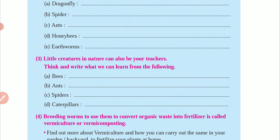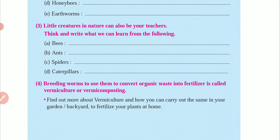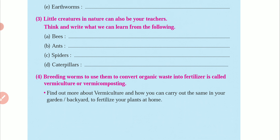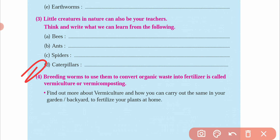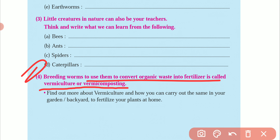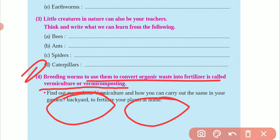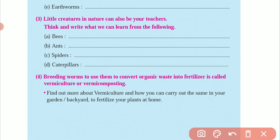The fourth activity: breeding worms to use them to convert organic waste into fertilizer is called vermicomposting or vermi-culture. Worms are used in the soil to keep it soft and fertile. The worms convert organic waste into fertilizer — this process is called vermi-culture or vermi-composting.